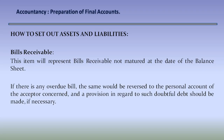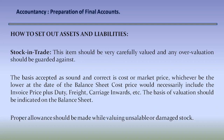Bills receivable: this item will represent bills receivable not matured at the date of the balance sheet. If there is any overdue bill, the same would be reversed to the personal account of the acceptor concerned, and provision in regard to such doubtful debt should be made if necessary. Stock in trade: this item should be very carefully valued, and any overvaluation should be guarded against. The basis accepted as sound and correct is cost or market price, whichever is lower at the date of the balance sheet. Cost price would necessarily include invoice price plus duty, freight, carriage, etc. The basis of valuation should be indicated on the balance sheet, and proper allowance should be made while valuing unusable or damaged stock.